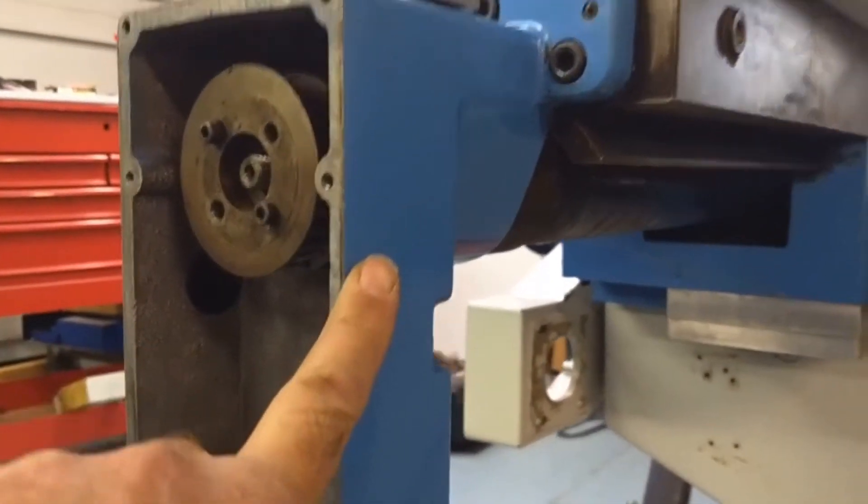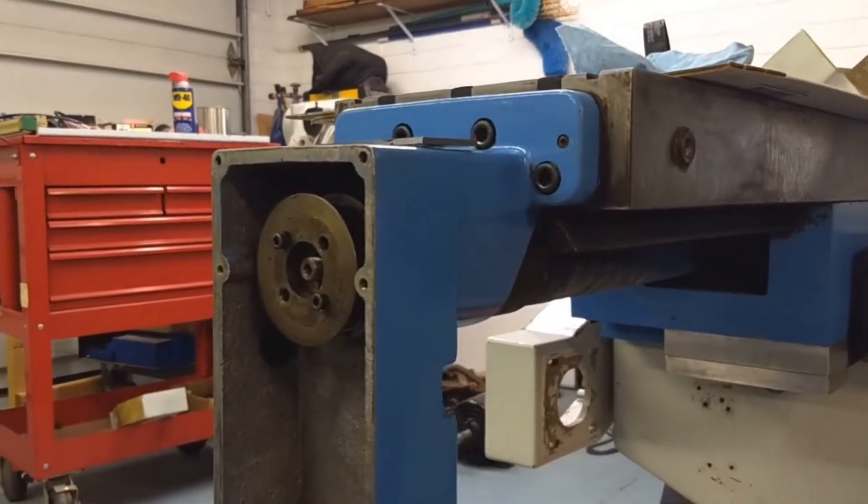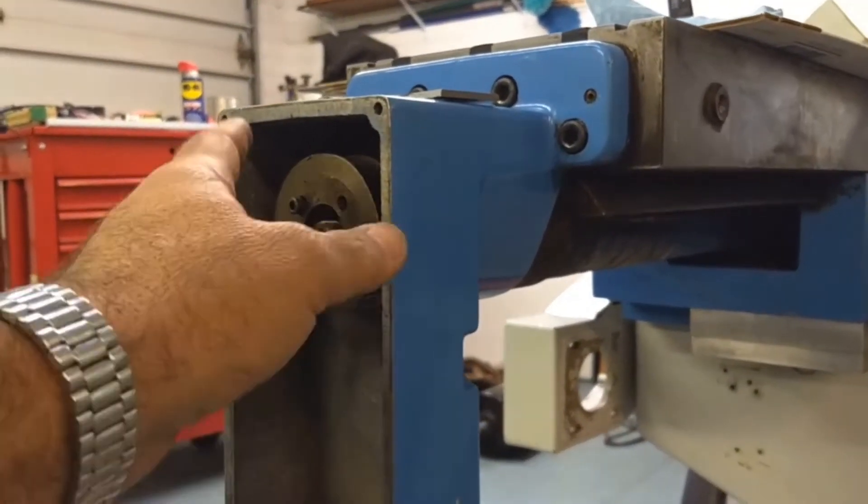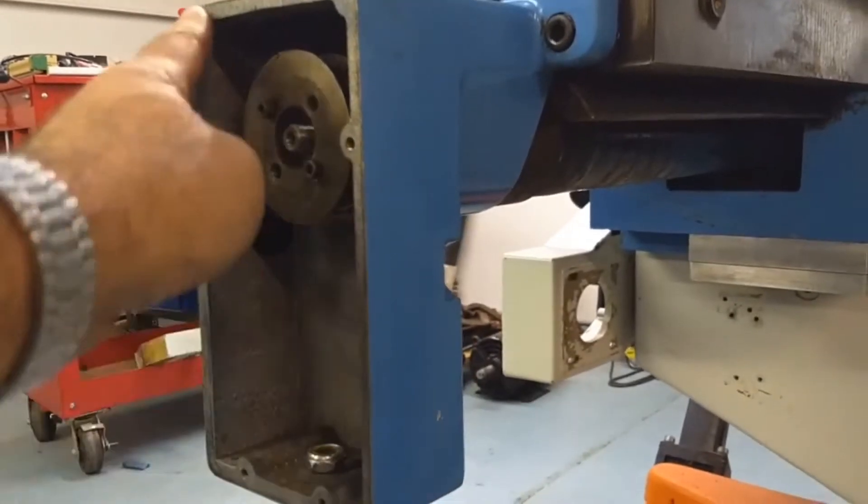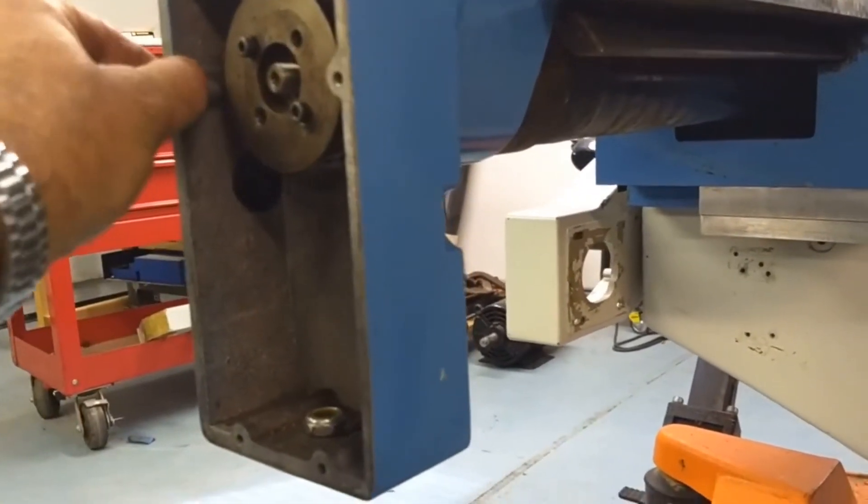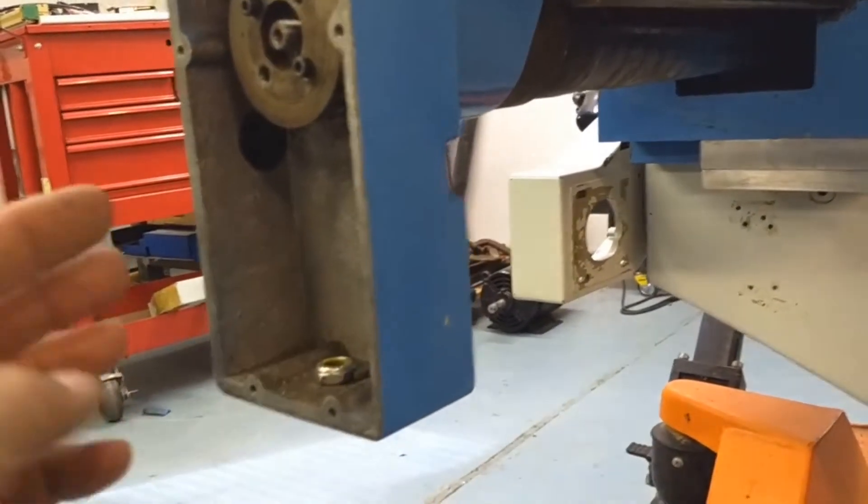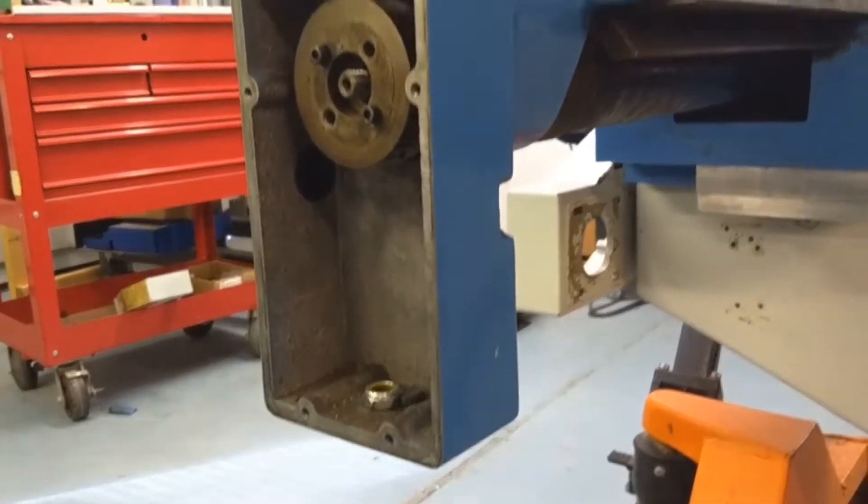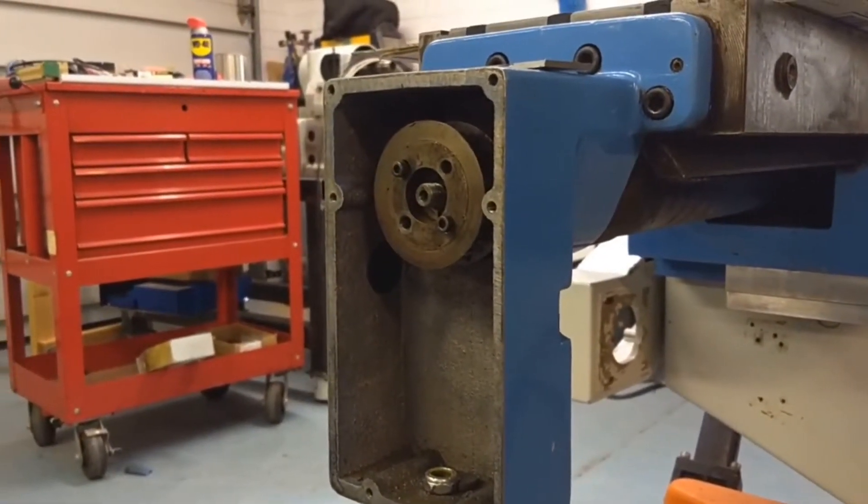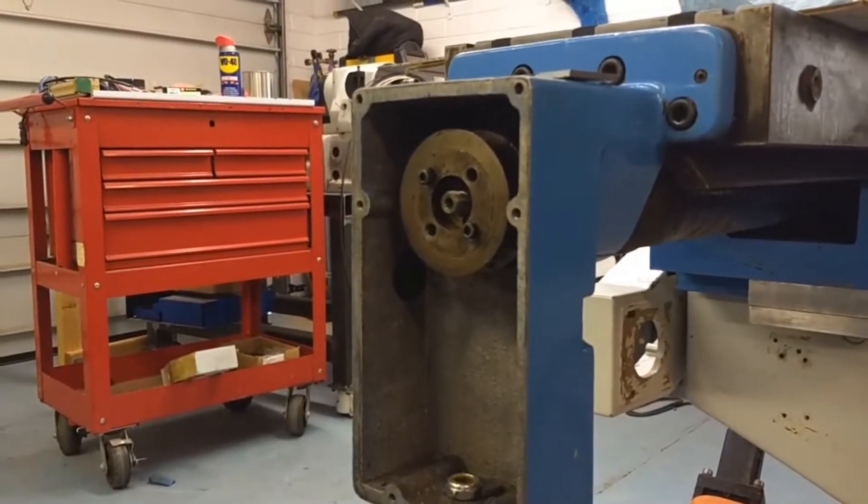Otherwise what I might end up having to do is take this thrust bearing mount off and machine some material off of this housing so that the servo motor gets closer to the x-axis pulley.